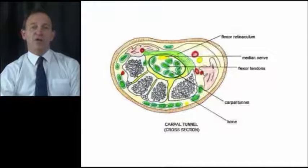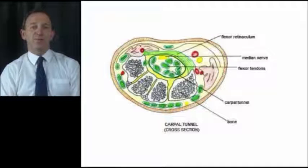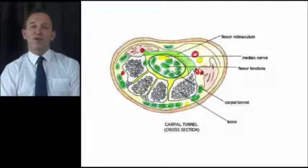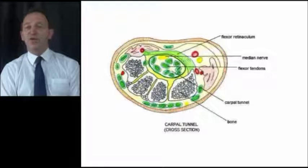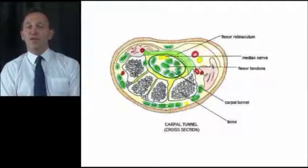In cross-section, the carpal tunnel carries blood vessels, flexor tendons and nerves. The first structure to complain when the carpal tunnel is put under increased pressure from a variety of causes is the median nerve.